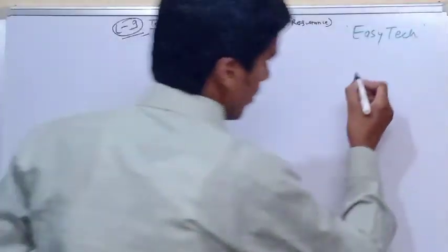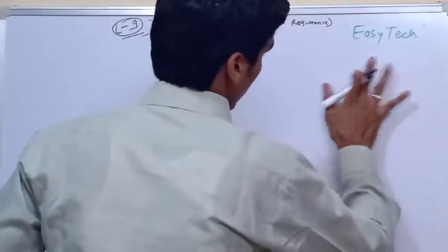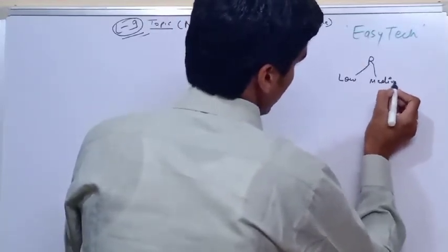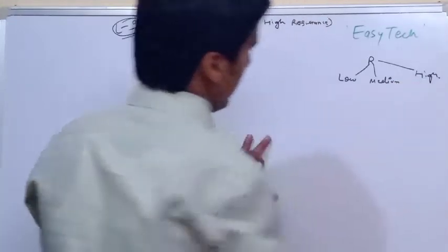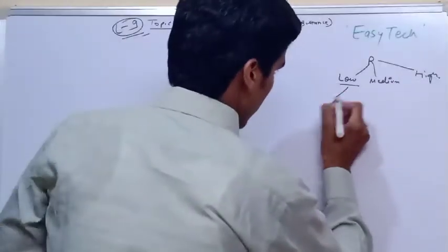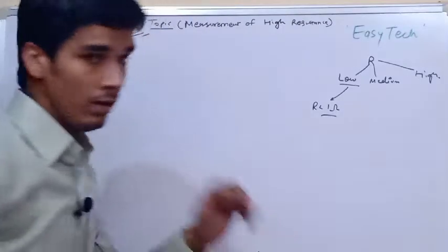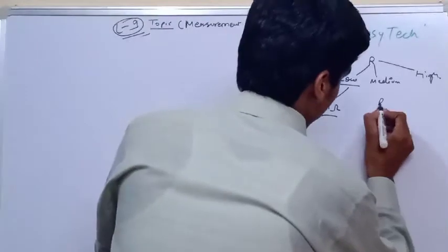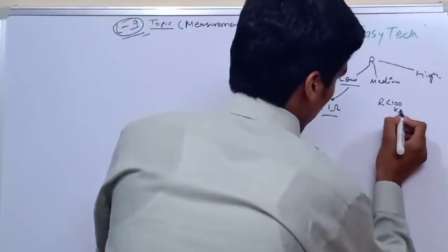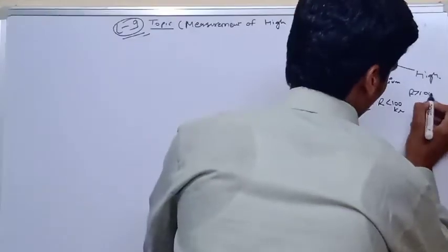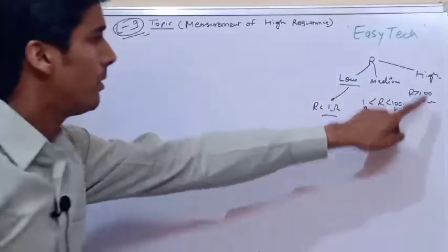First, I would like to remind you that resistance is classified into three categories: low resistance, medium resistance, and high resistance. The value of low resistance is less than 1 ohm. Medium resistance is greater than 1 ohm but less than 100 kilo ohm. High resistance is greater than 100 kilo ohm.